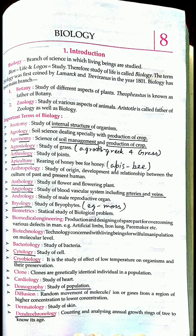Dendrochronology is counting and analyzing the annual growth rings of a tree to know its age. When you cut a very old tree, on the trunk you will see many rings, and by counting those rings you can tell the age of that tree. 'Chrono' means time, 'logy' means study, and 'dendro' is related to wood.